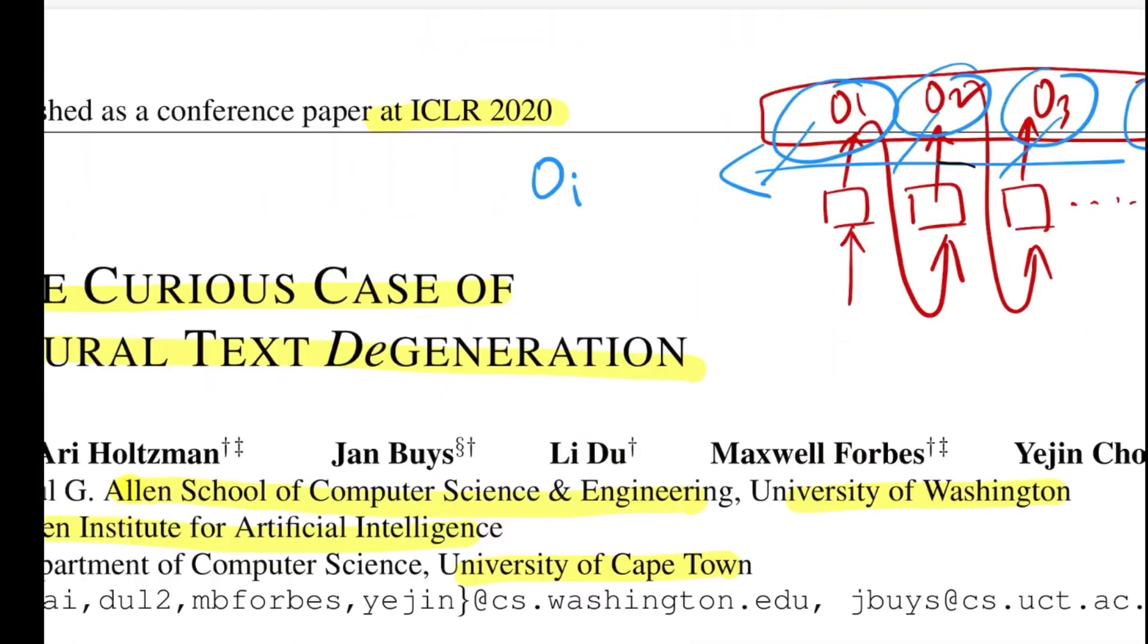They achieve this by truncating the unreliable tail of the probability distribution and then sampling from the tokens that have high majority of the probability mass. So at the output, if we have two axes, Y is probability and X is vocabulary words, nucleus sampling works by truncating the tails so we don't have very large sample size. If P equals 0.9, we sum all words till we get probability mass of 0.9 and sample a word from that region.